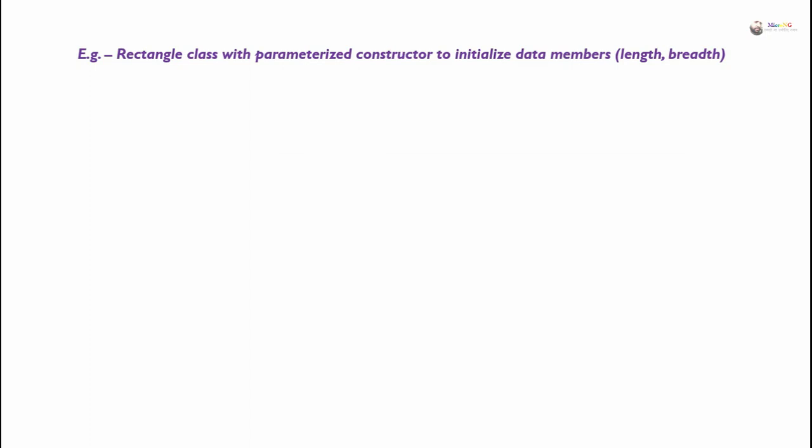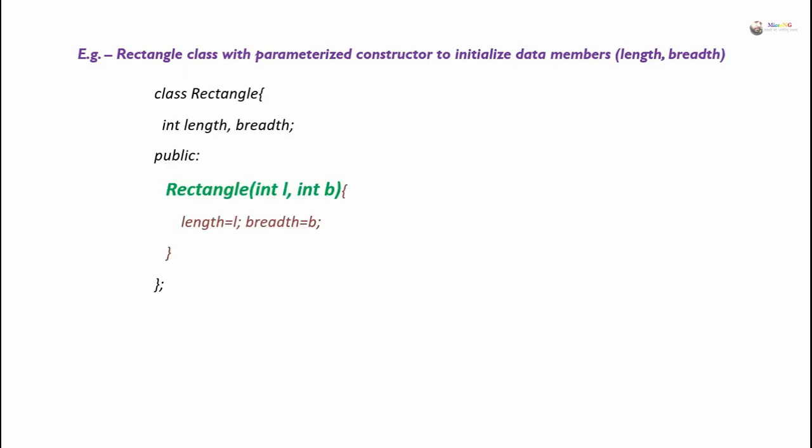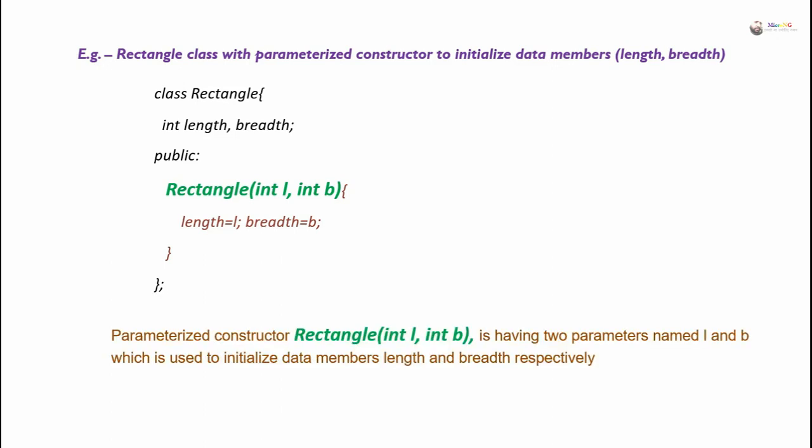Example: a Rectangle class with a parameterized constructor to initialize data members length and breadth. Here we have a class Rectangle with two private data members, length and breadth. In the public section, we have included a parameterized constructor. The constructor name is Rectangle, and it takes two parameters of integer type, L and B. Inside the parameterized constructor, we initialize the data members: length is initialized by the value of L and breadth is initialized by the value of B.